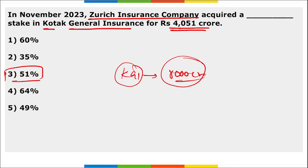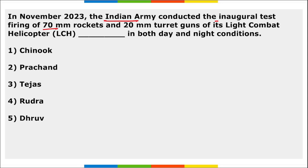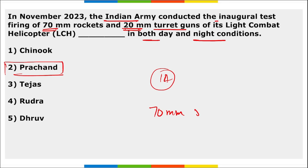The Indian Army conducted the inaugural test firing of 70mm rockets and 20mm turret guns of the Light Combat Helicopter (LCH) Prachand in both day and night conditions. Both the 70mm rocket and 20mm turret gun were recently tested successfully using the indigenous attack helicopter named Prachand (LCH).